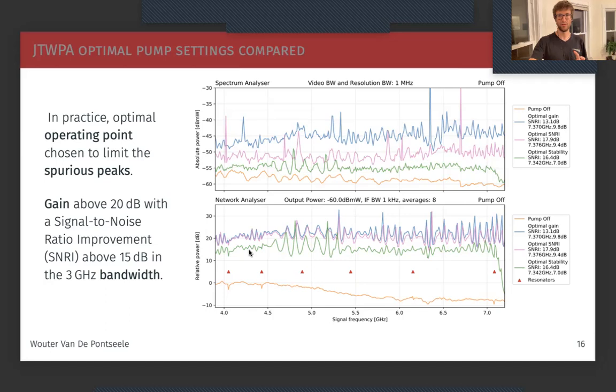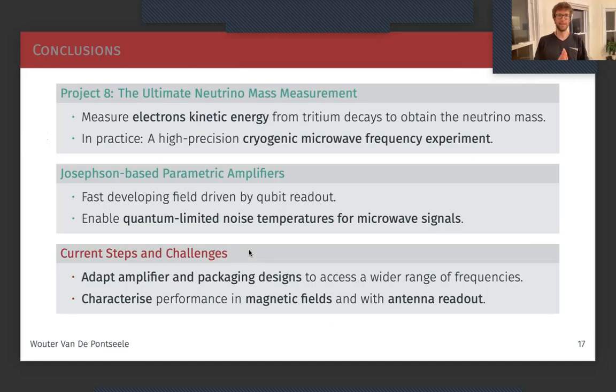So with this result I would like to take you to my conclusions. I introduced you to Project 8, which aims to be the ultimate neutrino mass experiment and will do so by measuring the electron kinetic energy from tritium beta decays and infer the neutrino mass. In practice, this is actually a high precision cryogenic microwave frequency experiment, and this is exactly how it's linked to this development of Josephson-based parametric amplifiers which currently have been developed for qubit readout in quantum computers. These enable quantum-limited noise temperatures for microwave signals, which give Project 8 this chance to measure the neutrino mass.